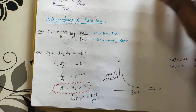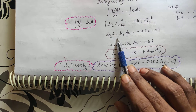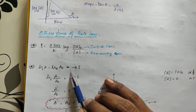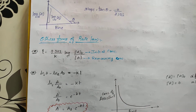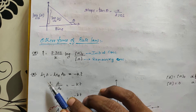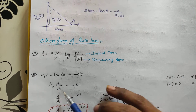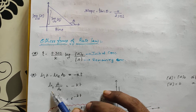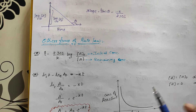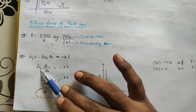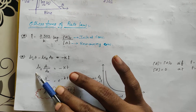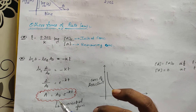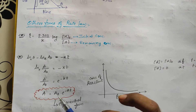One more form: ln[A] − ln[A₀] = −Kt, which gives ln(A/A₀) = −Kt. Removing ln, A/A₀ = e^(−Kt), so A = A₀·e^(−Kt). This is the exponential form of the first order reaction.